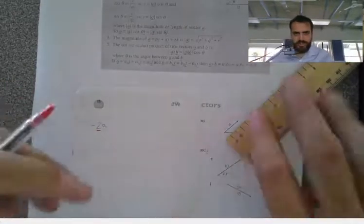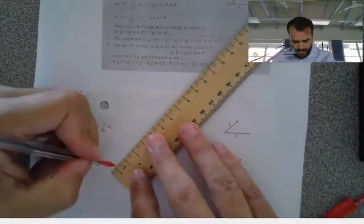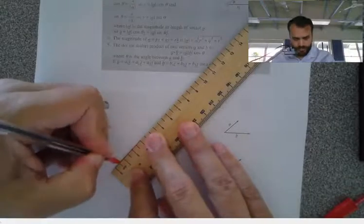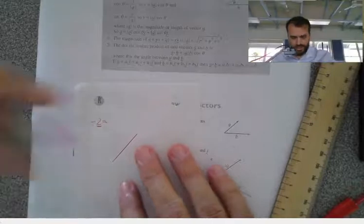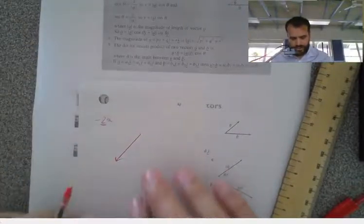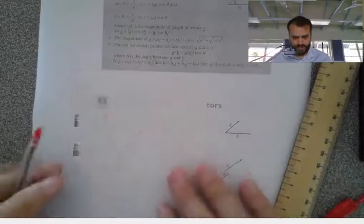Now, the 2, first of all, means it's going to be double that, so it's going to be 3 centimeters long. But it's negative, so it's in the other direction. So that's what negative 2A looks like for this vector.